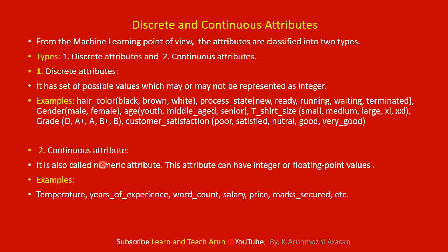Continuous Attributes are numerical and can have integer or floating-point values. Examples include temperature, years of experience, word count, salary, and price. Salary and price may be floating-point values. These are all continuous attributes. So those are the four types of attributes covered in this video. Thank you for watching.